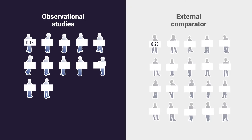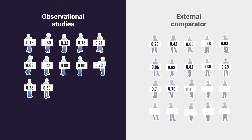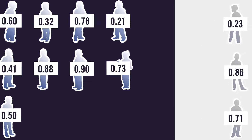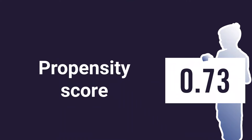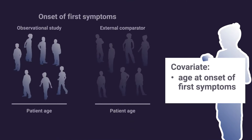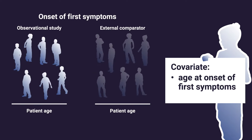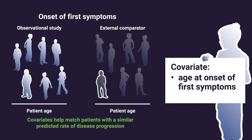So, how does propensity score matching work? Before patients can be matched, a propensity score based on key patient characteristic data or covariates must first be calculated for all patients in both the study of interest and the comparator group. The score is calculated using preselected covariates, allowing a valid comparison between the two groups to be made. For example, the age of patients when they first experience symptoms is one covariate that helps match patients with a similar predicted rate of disease progression.